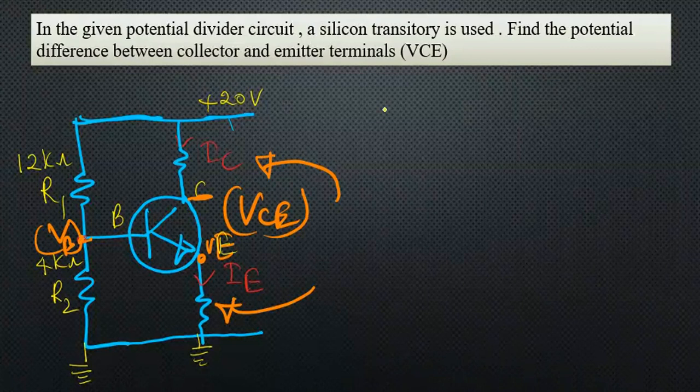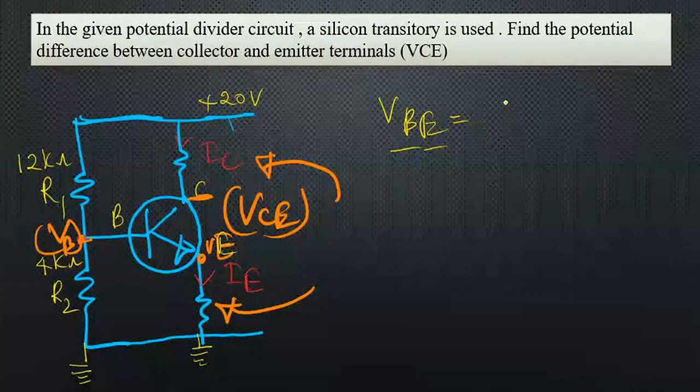One thing we need to know: if it's a silicon transistor, VBE, the potential difference between base and emitter, is 0.7 volts. We have to take it.